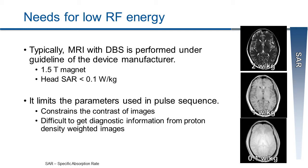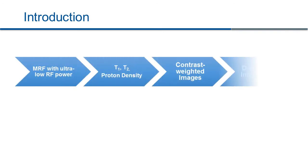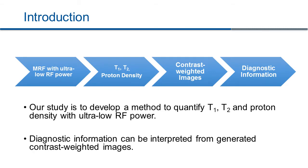This limits the flip angles used in the pulse sequence and constrains the contrast of images. As shown on the right side, the image acquired with SAR of 0.1 watts per kilogram is proton density weighted, which is difficult to get diagnostic information from. Here, we want to develop methods to quantify T1, T2, and proton density with ultra-low RF power, so that diagnostic information can be retrieved directly from quantitative maps as well as any contrast weighted images generated on demand.